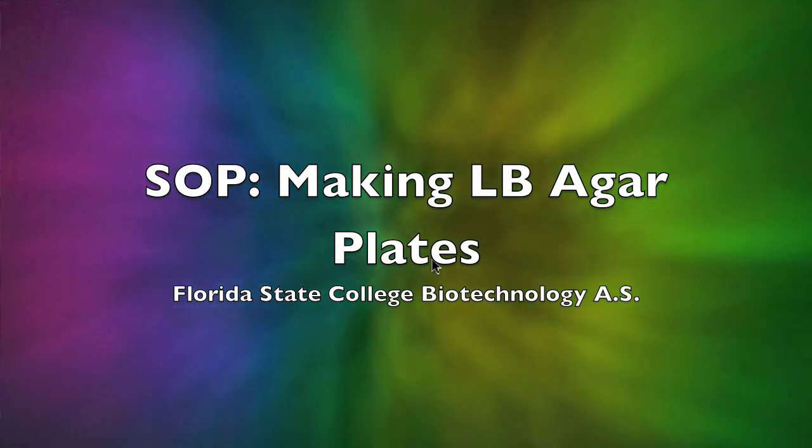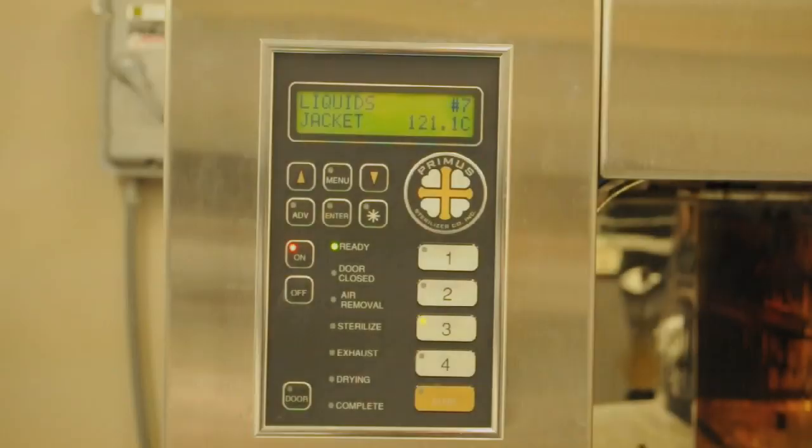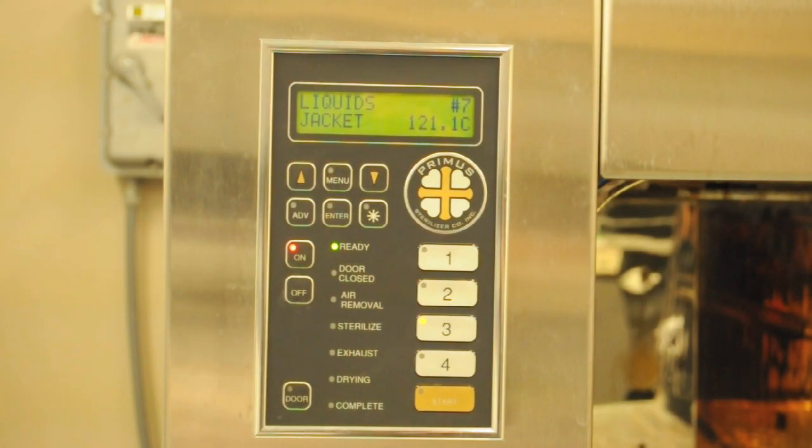In this SOP, we want to look at making LB agar plates. It's very important in the beginning to get the autoclave up and running. It can take a while to heat up, so make sure you start it first until it reads 121 degrees centigrade.